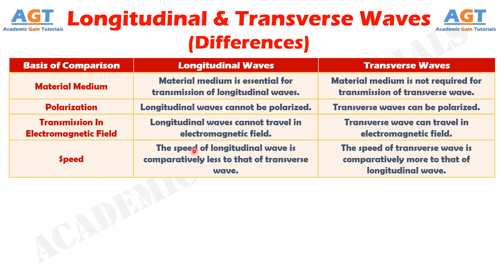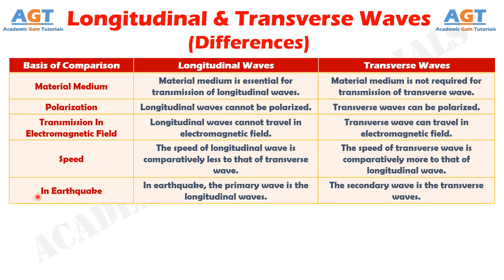If we differentiate them in terms of speed: the speed of longitudinal waves is comparatively less than that of transverse waves, while the speed of transverse waves is comparatively more than that of longitudinal waves. If we differentiate them on the basis of position in an earthquake scenario: in an earthquake, the primary wave is the longitudinal wave, and the secondary wave is the transverse wave.